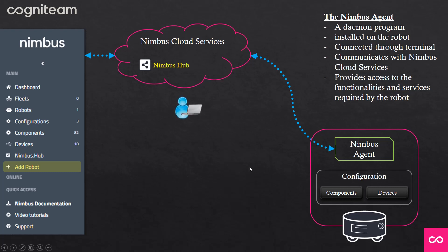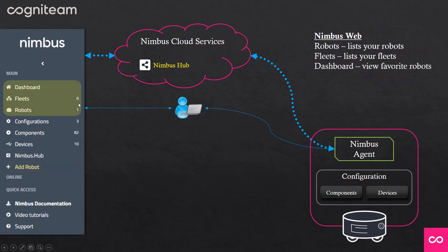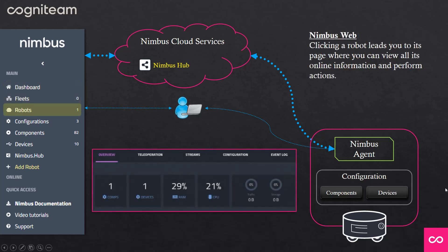So you, as a user, can now command and control your robot using the Nimbus web application or directly using an SSH terminal. Going back to the Nimbus web app, you can list your robots, group robots into fleets, and view them. With Dashboard, you can view your favorite robots. When clicking a robot, you can overview its entire status, perform teleoperations, view different streams — for instance, an emerging map of a laser scan or a camera view — and amend the configuration and view event logs.